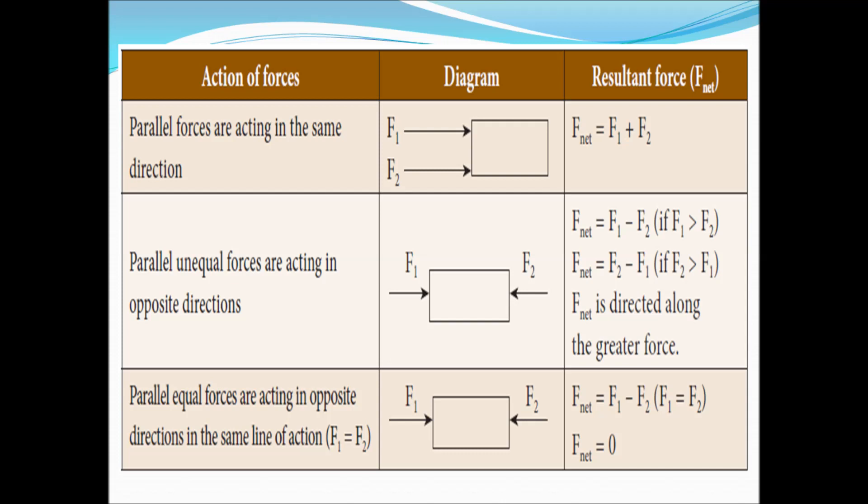The resultant force can be found for three cases. Case 1: two forces F1 and F2 act in the same direction — resultant F_net = F1 + F2. Case 2: two forces F1 and F2 act in opposite directions — resultant F_net = F1 − F2 if F1 > F2, or F2 − F1 if F2 > F1.